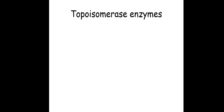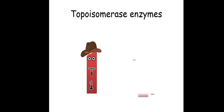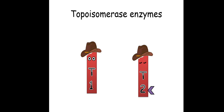Regarding topoisomerase enzymes, we have two types: type 1 and type 2. Type 1 topoisomerase has a cutter — called a nuclease — which cuts like a knife, and a ligase which seals or joins like glue. Type 2 topoisomerase also holds a nuclease in one hand and a ligase in the other, but it is inactive and requires ATP to get activated. The key difference: type 1 topoisomerase does not require ATP, but type 2 topoisomerase requires ATP for activation.